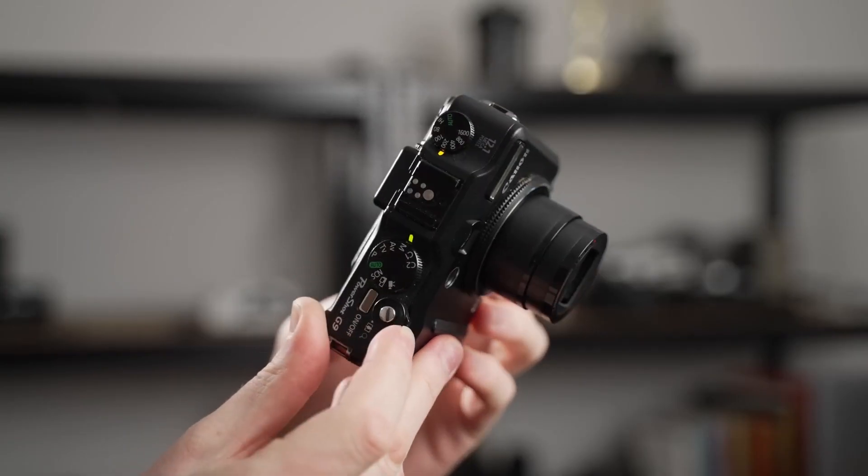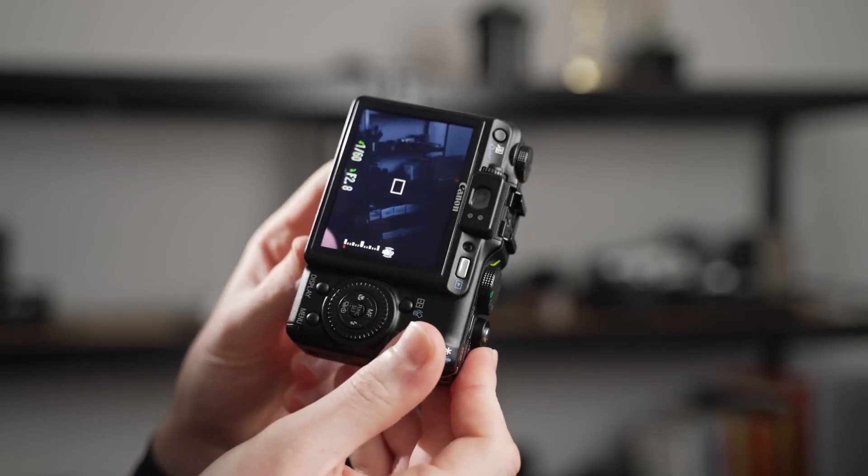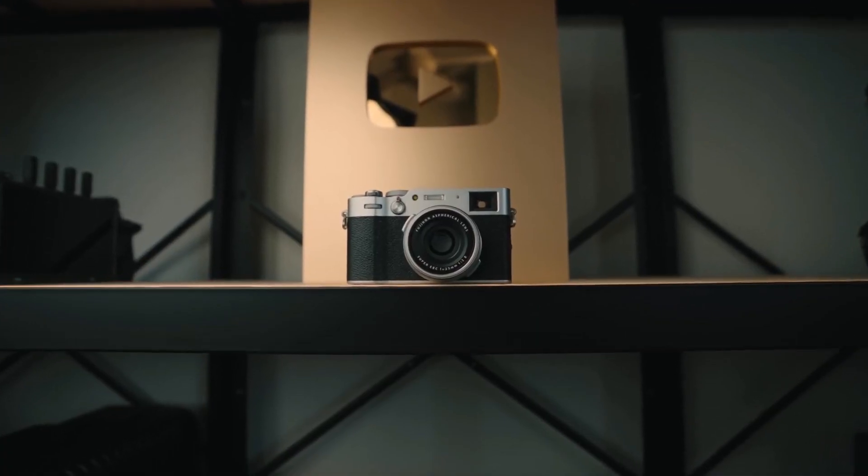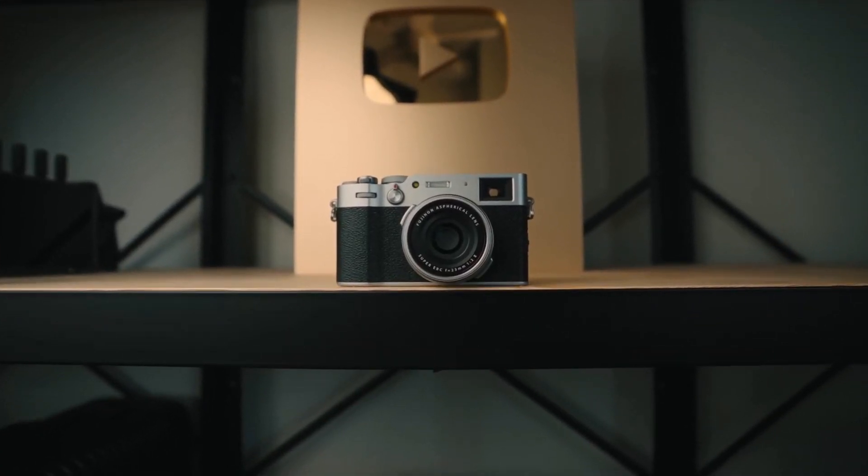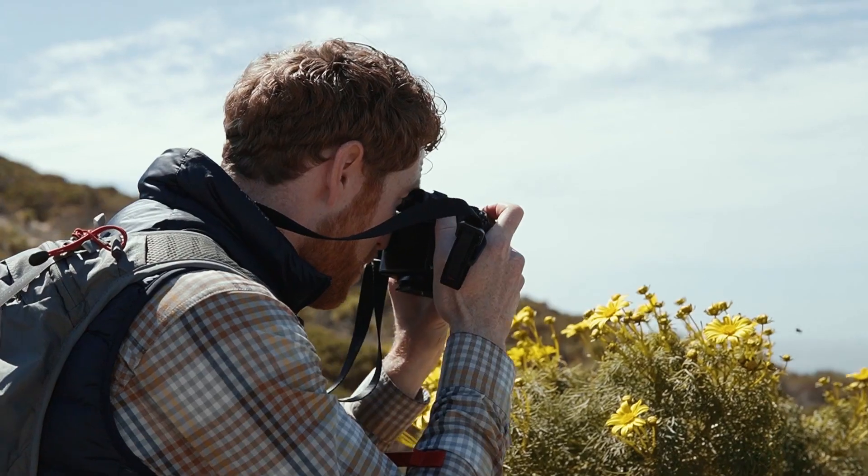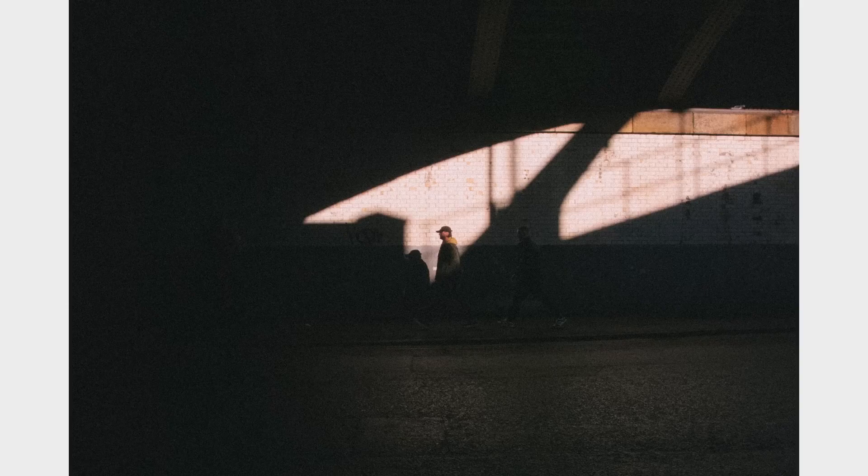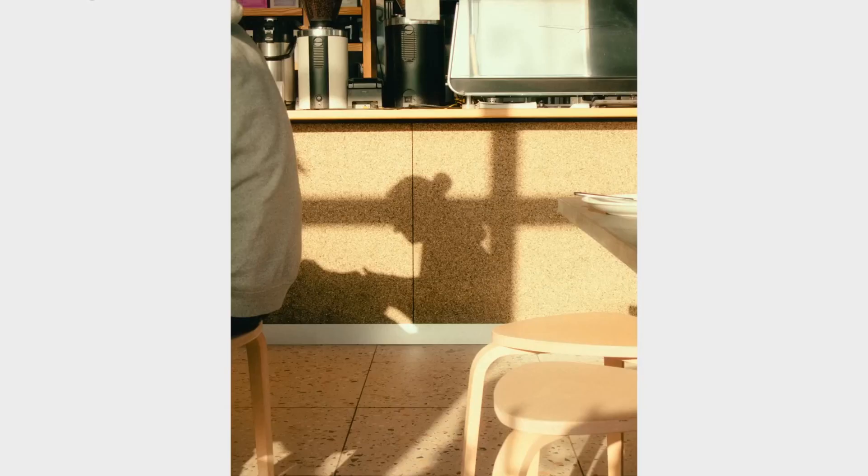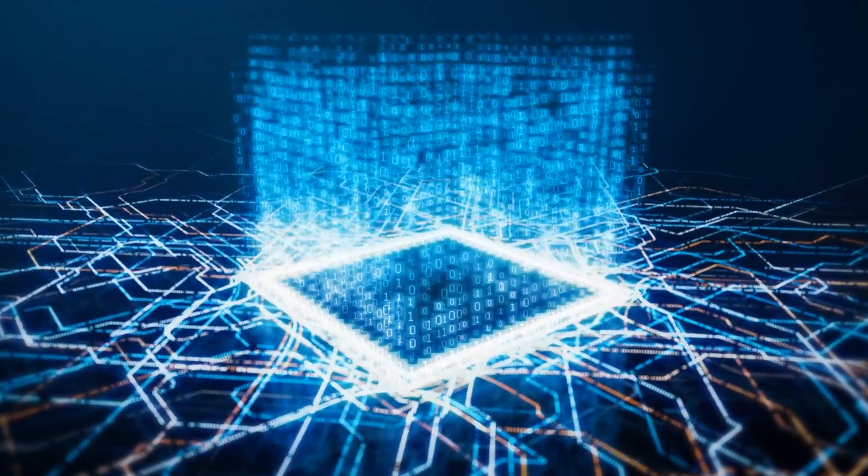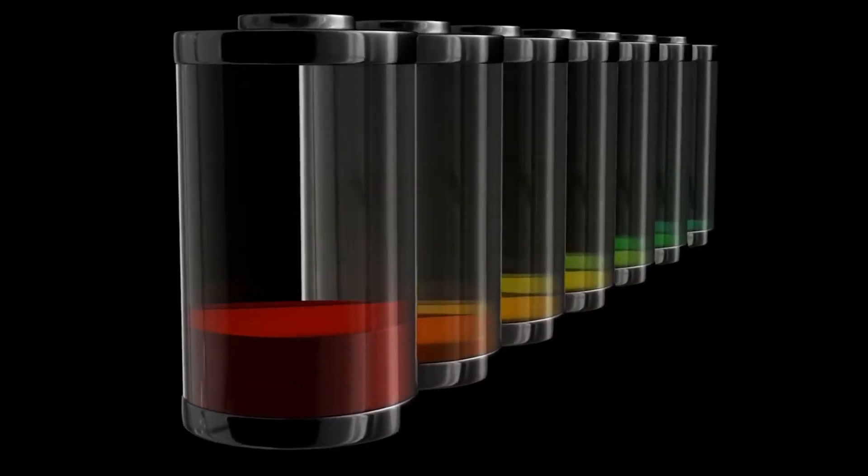However, it's worth noting that there are many CMOS-based cameras that have excellent JPEG engines such as Fujifilm and Olympus. On the other hand, if you shoot and process raw images, you can mimic the output of CCD sensors. Plus, the wider latitude of CMOS sensors allows you a much greater range of options.